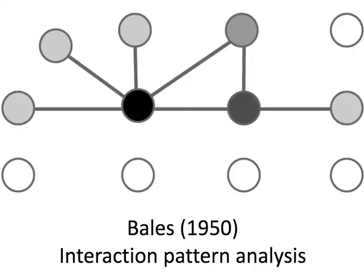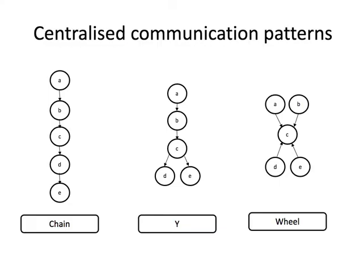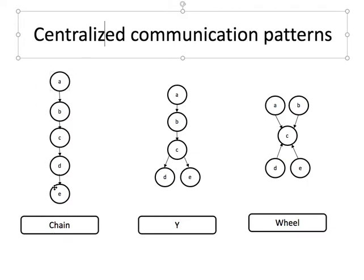A similar approach is adopted by Bales in his interaction pattern analysis. Bales was specifically interested in understanding communication patterns amongst groups. Like Whyte and Moreno, he suggested that when you look at how people communicate in groups, you see much more structure than might otherwise appear. Bales identified five essential types of communication structure: chains, where one person talks to another who talks to another in a hierarchy; and Y-shaped groupings, similar to a chain but where a key central actor mediates information down to multiple others.